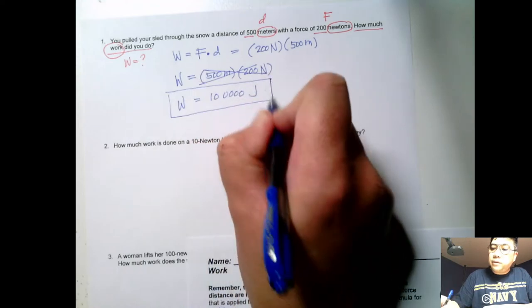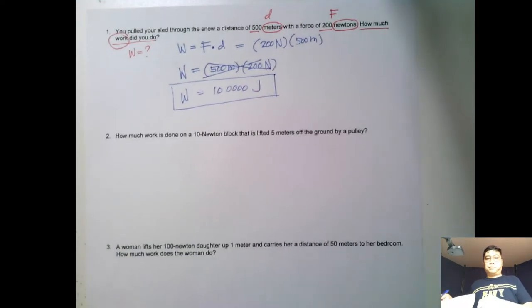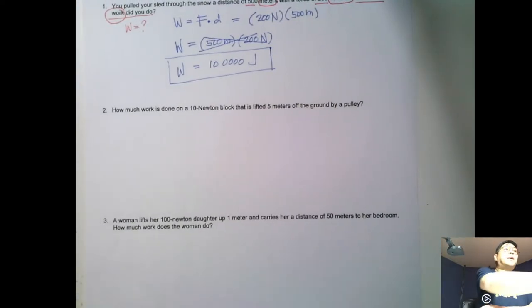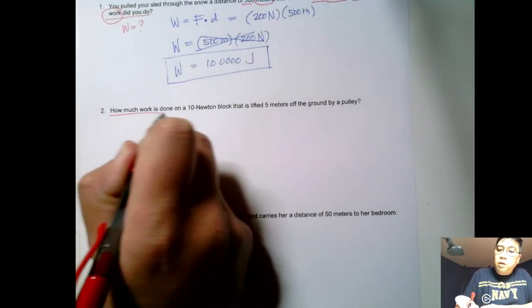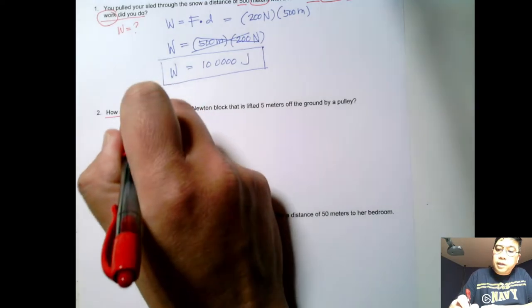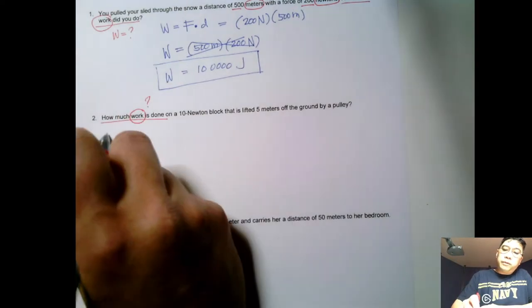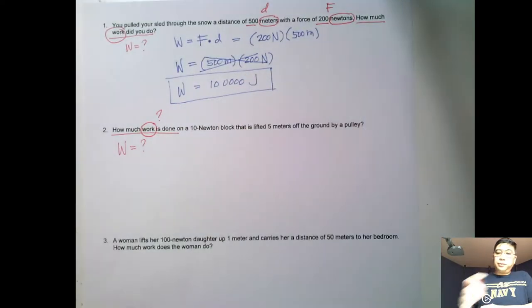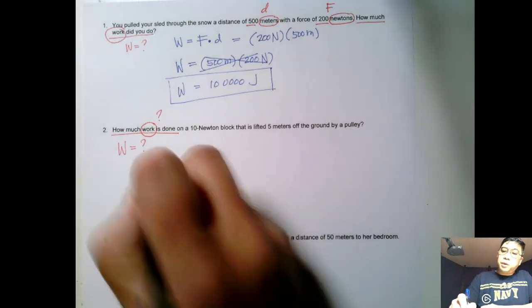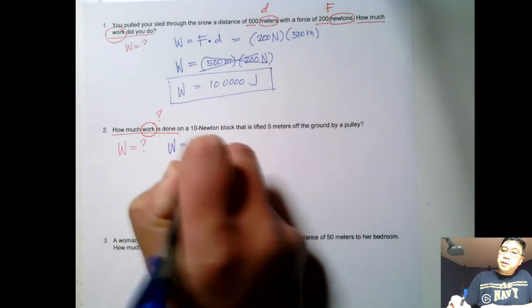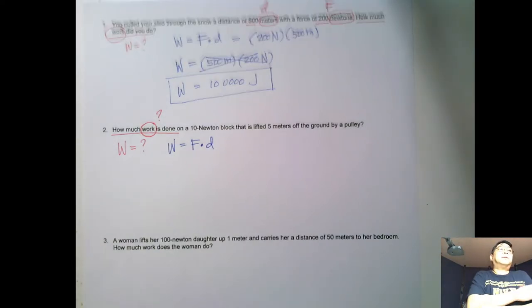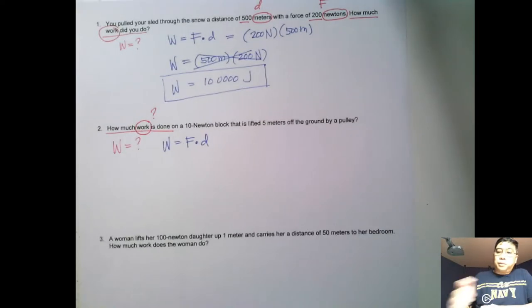For the second example: how much work is done? Again, the question asks how much work is done, so we are solving for work again. From the previous example, we write down the equation: work is equal to force times distance.